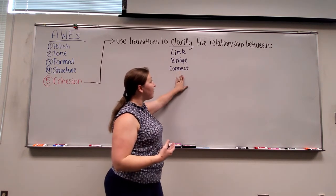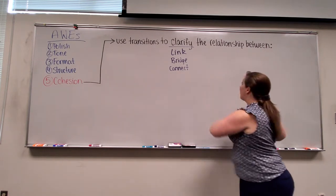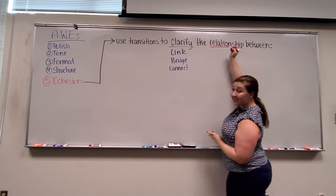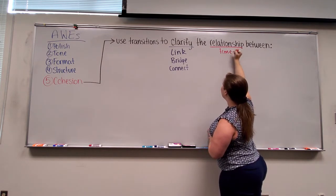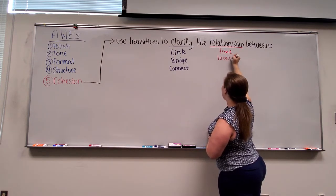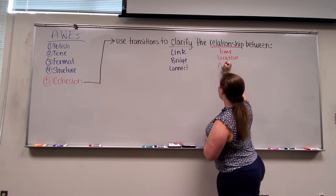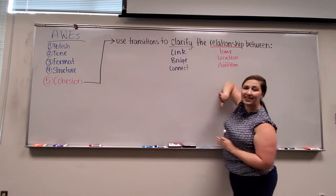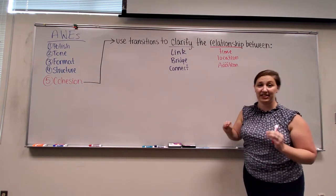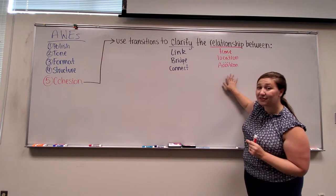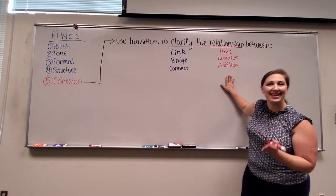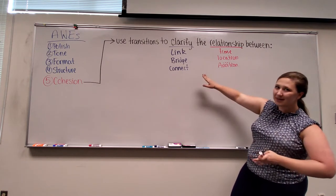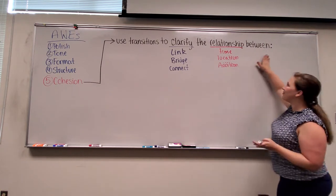You are clarifying the relationship — and this relationship could be a time relationship, location, addition, and the list goes on and on. There is a list of transitions in Blackboard that has all of these different relationships with example transitions. What we need to know is what relationship we are clarifying between.